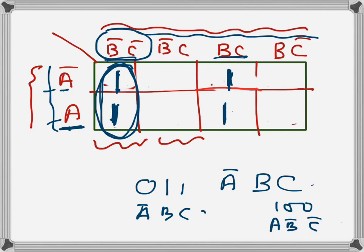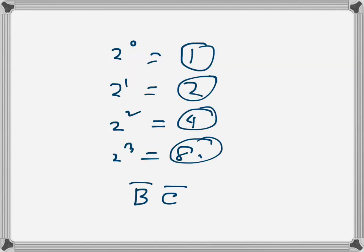These other two ones are also adjacent and form a second group. Here again A is changing — one cell has A-bar and the other has A — so A is not common. What is common is B-C. So the second group contributes B-C, and the minimized sum of products expression from the K-map is B-bar C-bar + B-C.